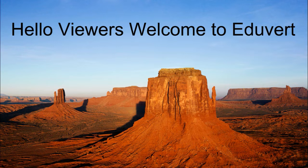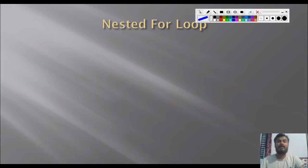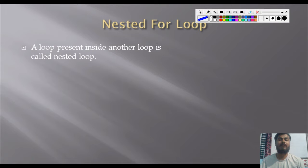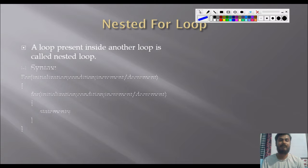Hello viewers, welcome back to Eduvert. In the previous lecture we learned about the use of the for loop. In today's lecture we are going to learn about the nested for loop structure in C programming. A loop present inside another loop is called a nested loop. If any for loop is present inside another for loop, then it is called a nested for loop.